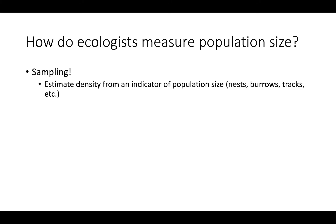The first one is estimating the density from some sort of indicator of population size, such as the number of nests, the number of burrows, tracks, animal droppings, and things of that nature.